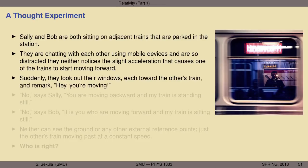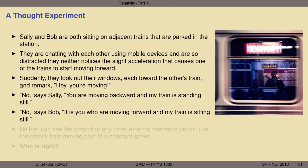Then a disagreement begins. 'No,' says Sally, 'you're moving backward — my train is standing still.' 'No,' says Bob, 'it's you who are moving forward and my train is sitting still.' They both agree on what forward and backward are — forward perhaps is east along the tracks, backward is west. There they don't disagree. Sally might say you're moving westward and Bob might say you're moving eastward. But what they disagree on is who is doing the moving.